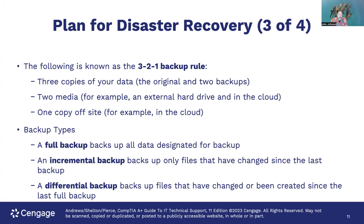There's the 3-2-1 backup rule, which is talked about a lot. You want to keep three copies of your data — the original plus two backups. Use two different types of media, like an external hard drive and the cloud. Keep one copy off-site, ideally in a geographically diverse area, because if a disaster wiped out your whole town, a copy stored across town wouldn't help. Consider cloud storage like AWS where you can specify where data is stored.